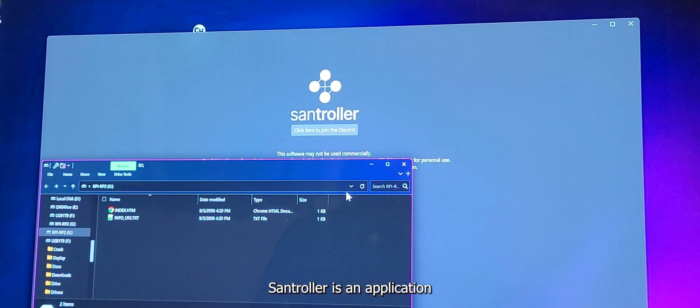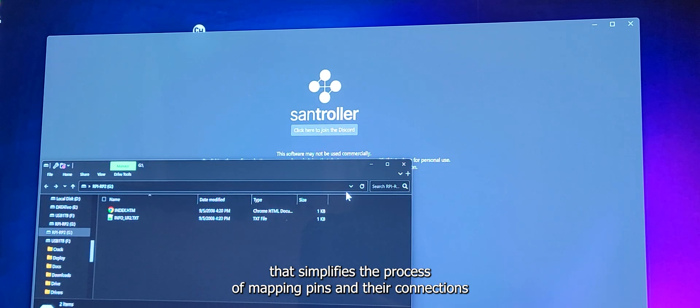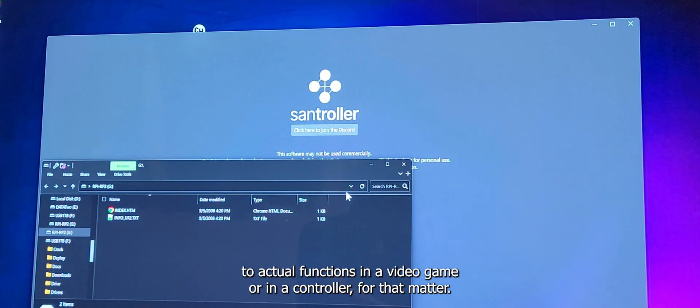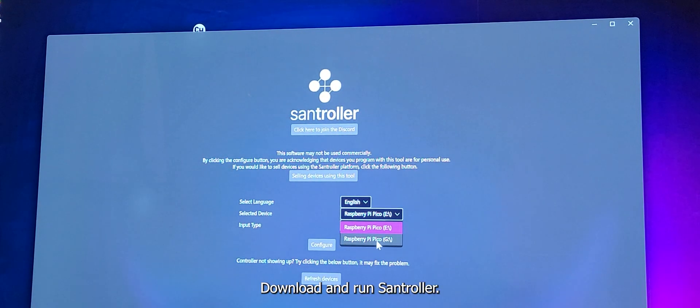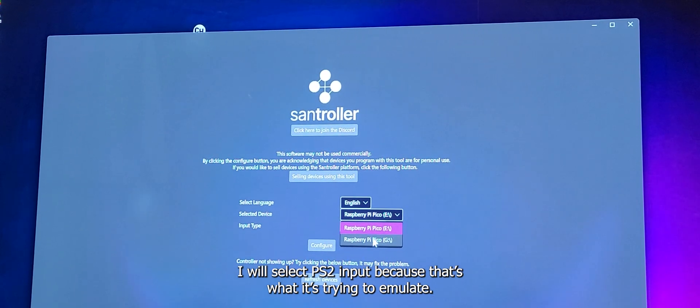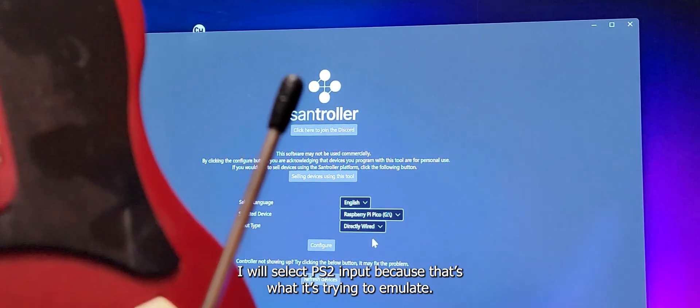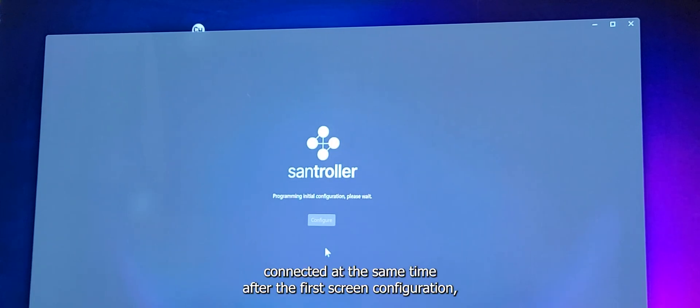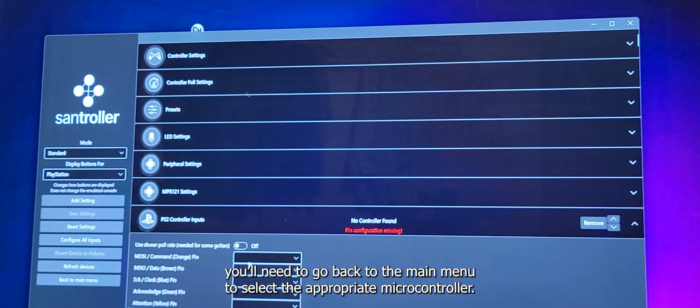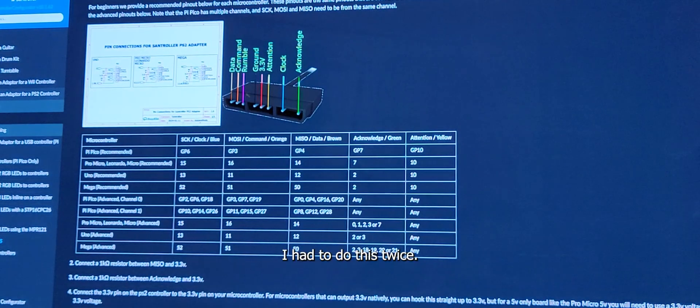Santroller is an application that simplifies the process of mapping pins and their connections to actual functions in a video game or in a controller for that matter. Download and run Santroller. I will select PS2 input because that's what it's trying to emulate. Keep in mind that if you have two microcontrollers, like the Pi Pico, connected at the same time after the first screen configuration, you'll need to go back to the main menu to select the appropriate microcontroller. I had to do this twice.